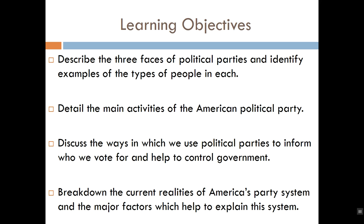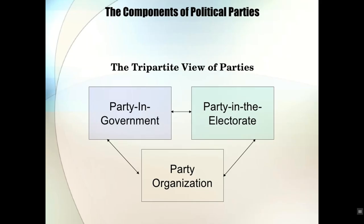Number two asks you to detail the main activities of the American political party. Number three asks you to discuss the ways in which we use political parties to inform who we vote for and help us to control government. And finally, learning objective four asks you to break down the current realities of America's party system and the major factors which help explain why we have this particular system.